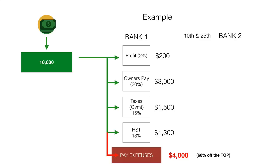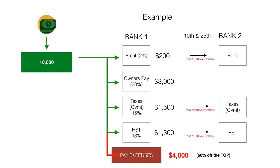The question I always get from clients is: 'What if I don't have enough money after doing this to pay my expenses?' The answer is you have to reduce your expenses and/or increase your sales — increase the money coming in. A lot of us have too many expenses that aren't optimized. So this is a reality check. On the 10th and the 25th you're allocating this money, and on the 25th you're moving the profit and tax account money over to that other bank — out of sight, out of mind.